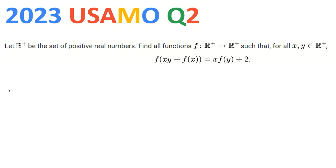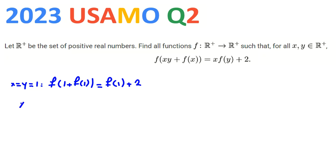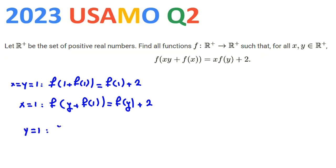So let's start with x equal to 1. If we replace both x and y with 1, it will be f(1) + f(1) = f(1) + 2. Now let's only replace x with 1: it will be f(y) + f(1) = f(y) + 2. Now let's replace y with 1: it will be f(x) + f(x) = x·f(1) + 2. These two substitutions are good.